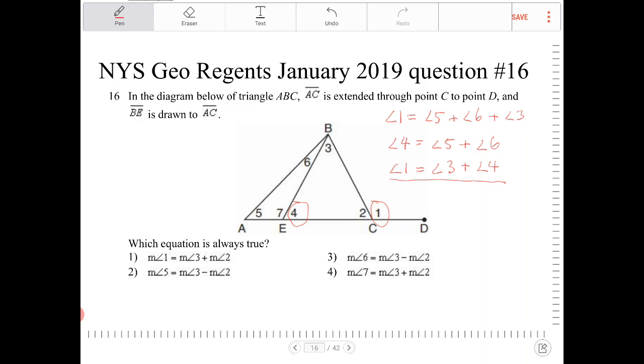Option 2, angle 5 is equal to 3 minus 2. That does not always have to be the case.